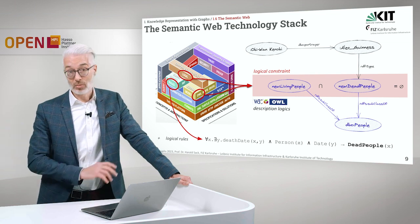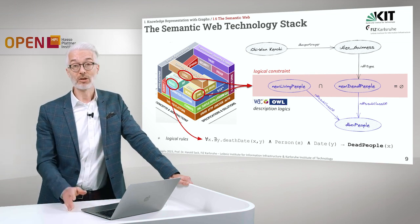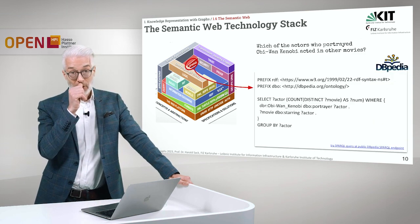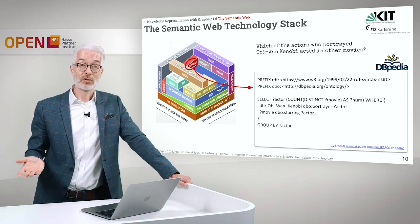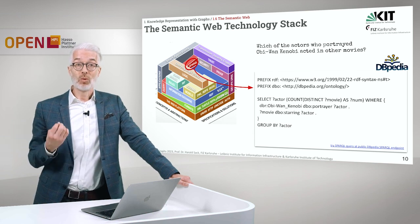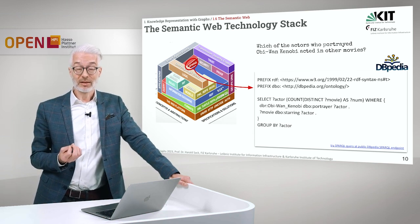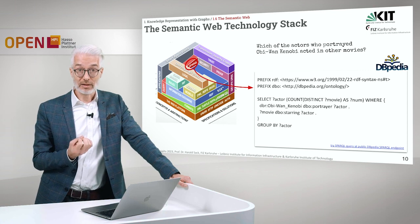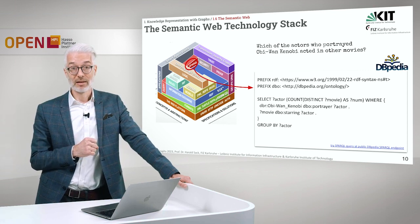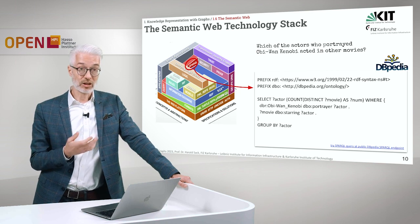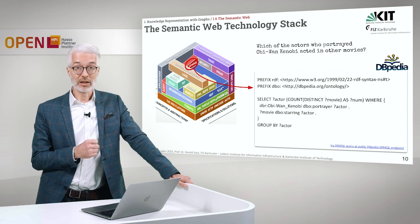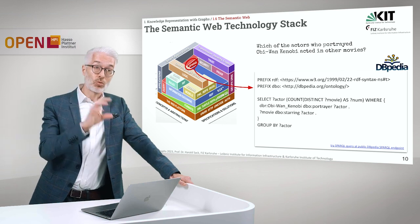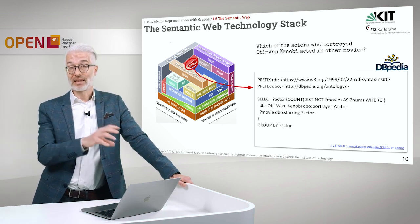We will go deeper into logical rules and how to express and use them later on. One of the most important things is, as soon as you have constructed a huge knowledge graph, you want to make use of it. One way to do that is to use a query language. The query language we will use here is the SPARQL query language for the Semantic Web Technology Stack. SPARQL is based on SQL, which you might already know from relational databases — it's quite similar, but it's a query language that works on graphs, and the main purpose is pattern matching on graphs.